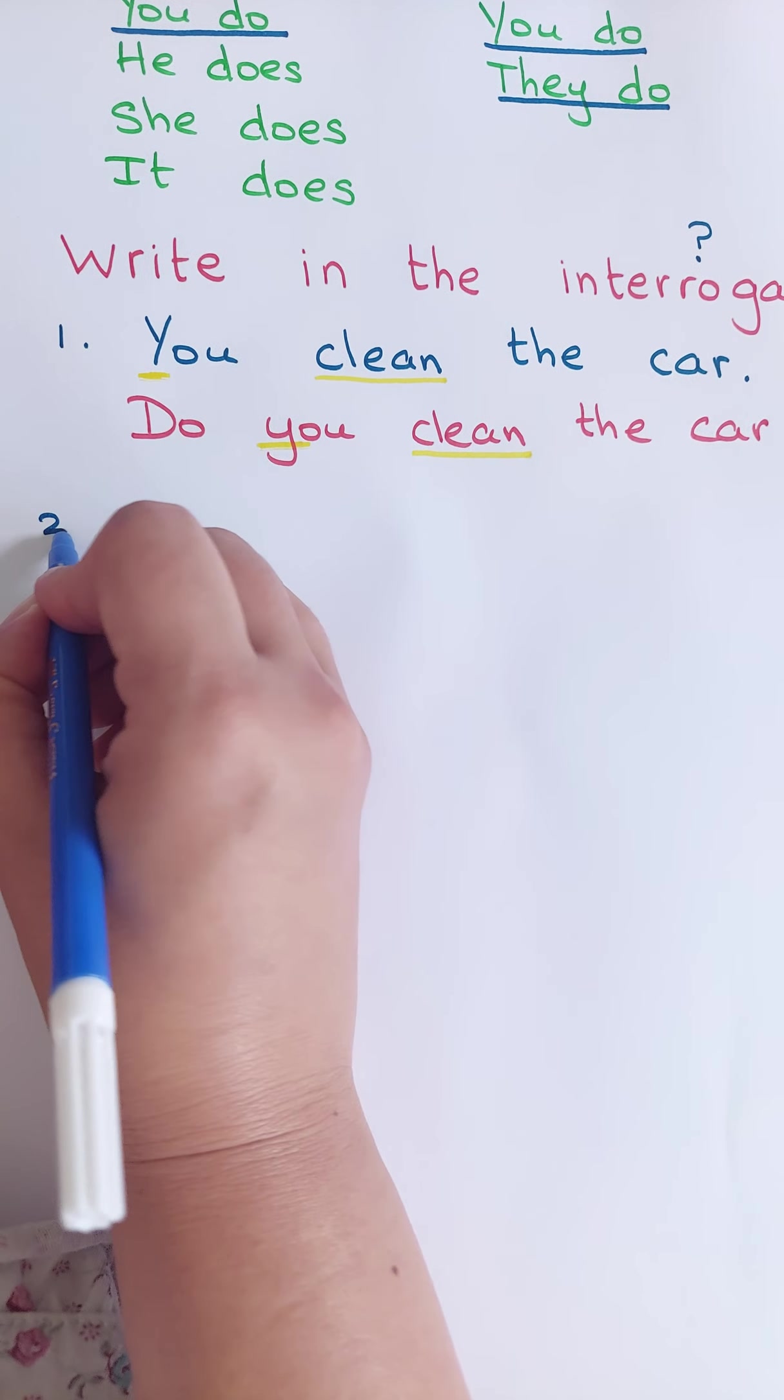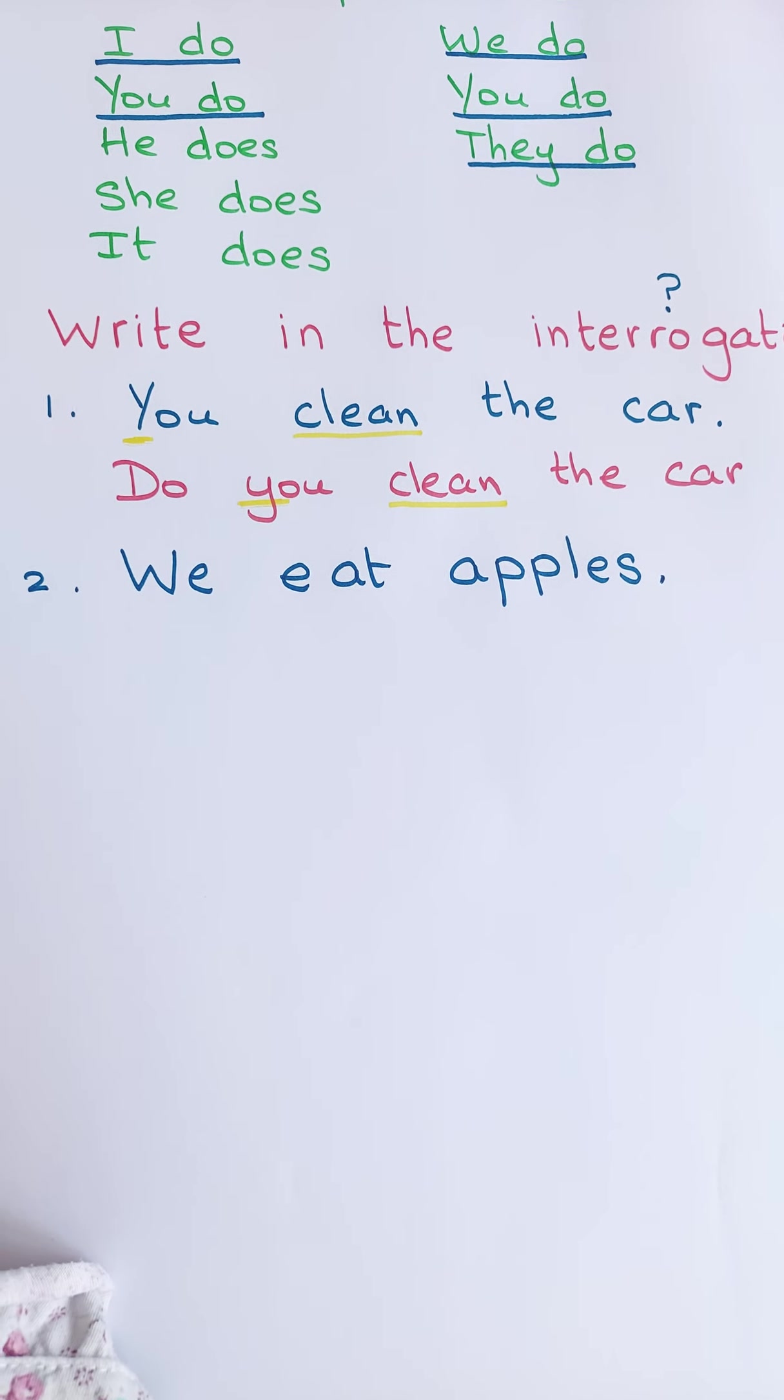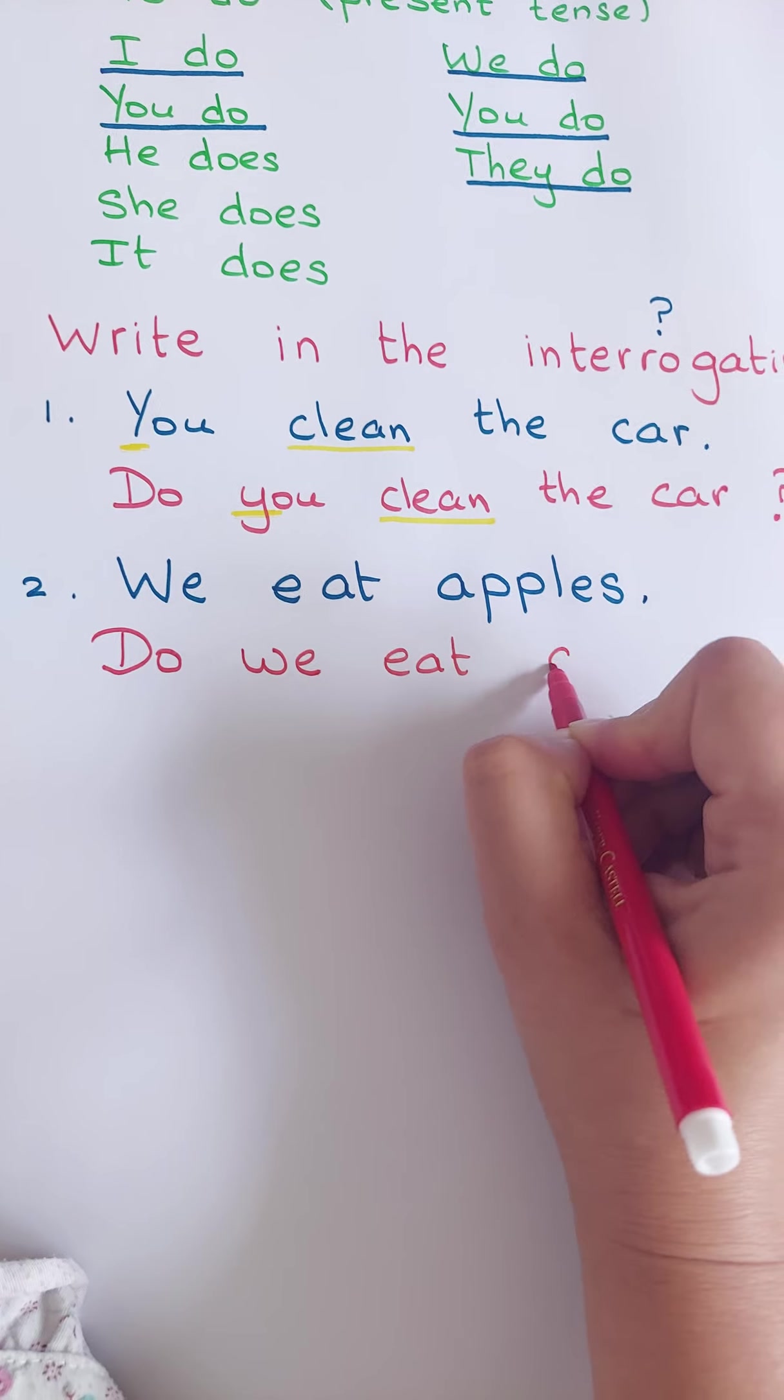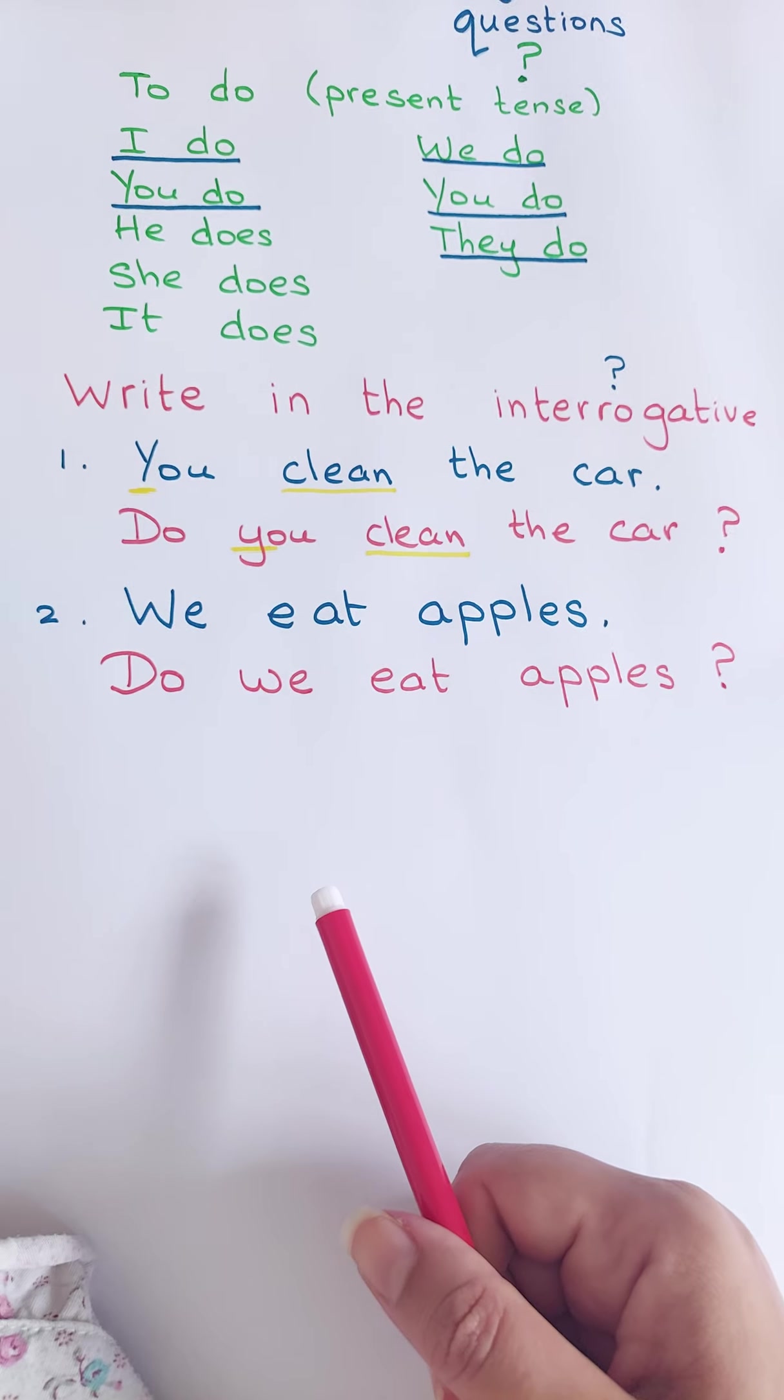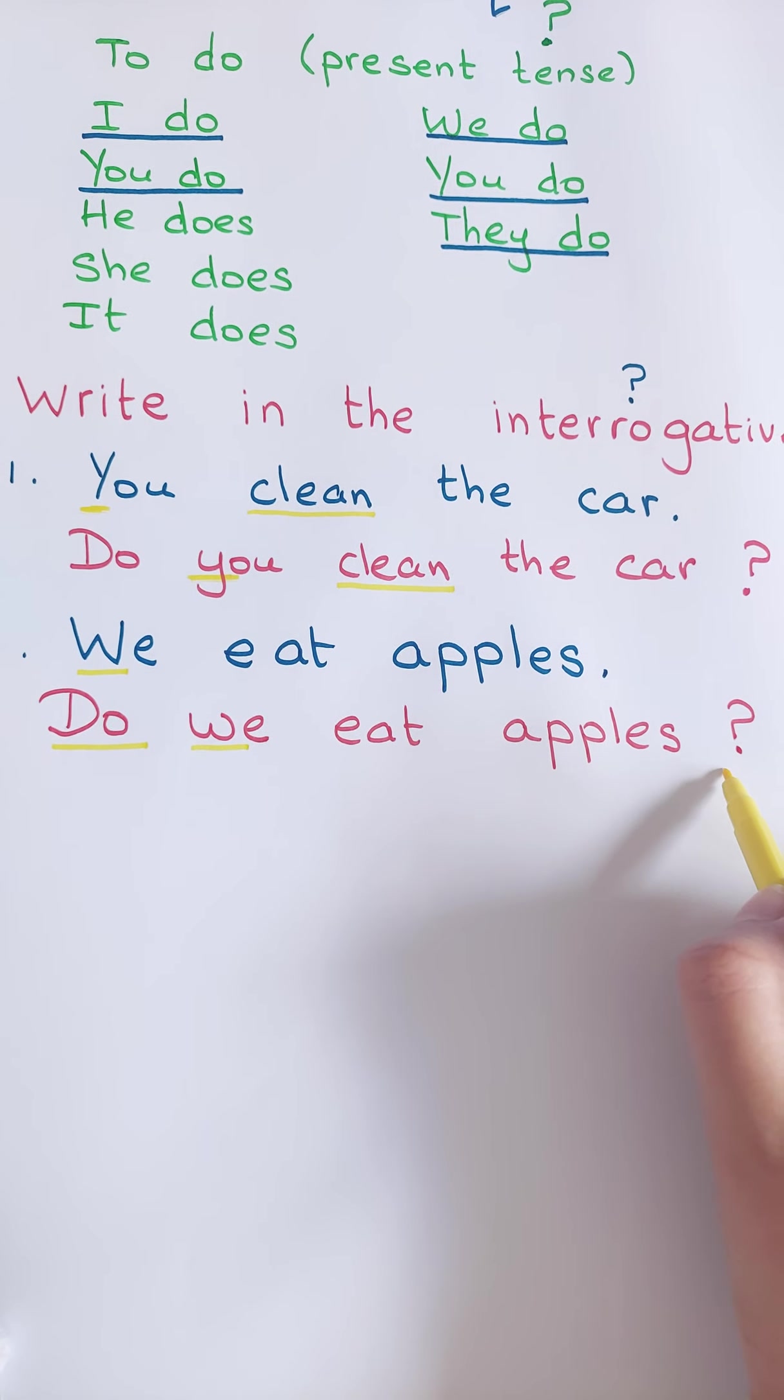Je donne un deuxième exemple. Do we eat apples? Nous mangeons des pommes. Si je fais une question, je mets do devant. Je mets do devant cette phrase-là. Do we eat apples? Est-ce que nous mangeons des pommes? Très bien, alors, ici aussi, je remorque que j'ai mis do devant la phrase. Ici, il y avait un grand W. Ici, c'est un small W. Et à la fin, je n'oublie pas mon question mark.